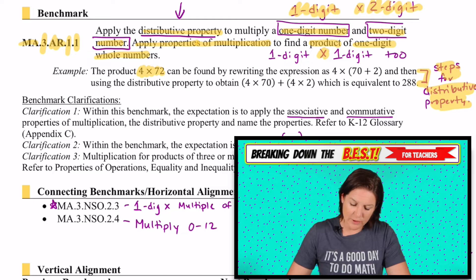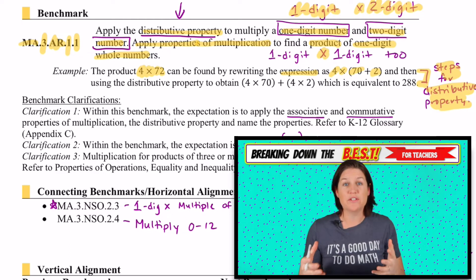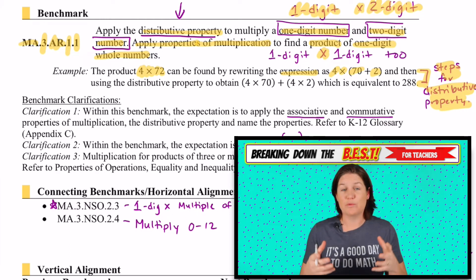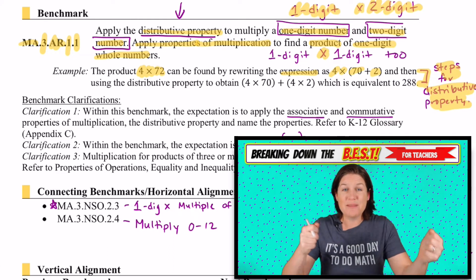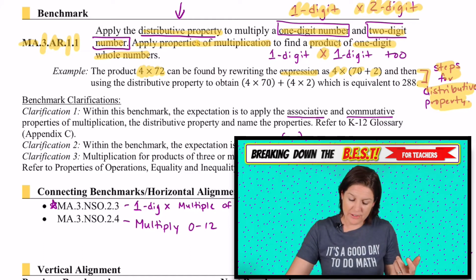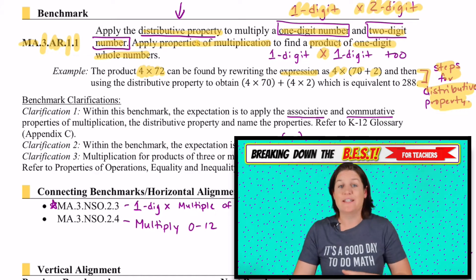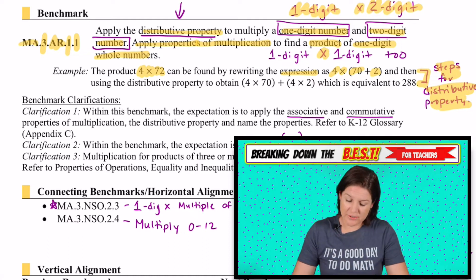It says the product of four times 72 can be found by rewriting the expression as four times 70 plus two. We're breaking down that factor. That's what the distributive property is. It's where we take one of the factors and we break it down to make it easier to multiply. So if we break down the factor of 72 into 70 plus two, it then makes it easier for us to solve.